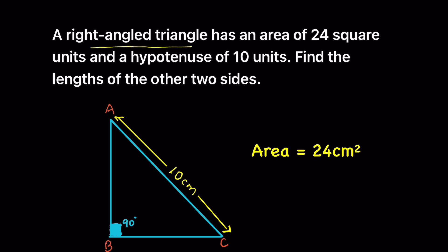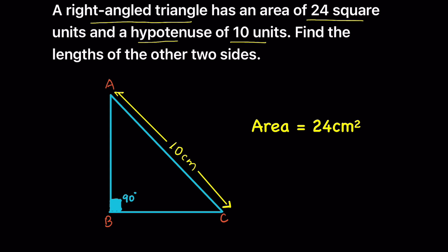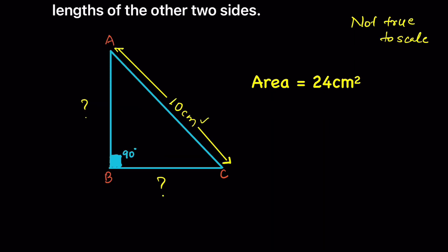A right angle triangle has an area of 24 square units and a hypotenuse of 10 units. Find the lengths of the other two sides. This is the right angle triangle here, the hypotenuse AC is 10 centimeters. We have to find the other two missing sides. Note that this figure is not true to scale — just for presentation. Given: area is 24 cm², hypotenuse is 10 cm.